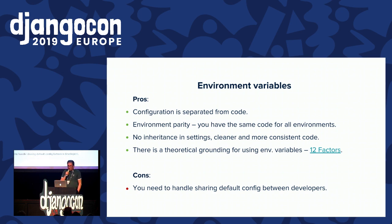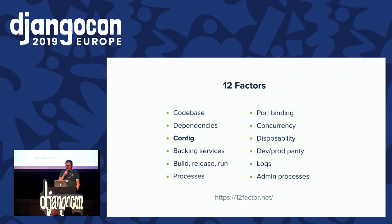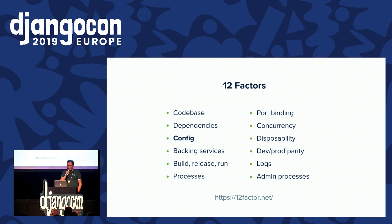This approach has a lot of advantages. Finally, we have configuration separate from code. You have environment parity between all your servers. There is no inheritance, and also there is theoretical grounding for using environment variables for configuration — it's 12 Factors. 12 Factors is a collection of recommendations to build web apps to be easily deployed and scaled in the cloud. It was created by Heroku, a well-known cloud hosting provider. In terms of this talk, we are interested in the configuration factor, which literally says we need to use environment variables. If you are not familiar with 12 Factors, I strongly recommend you check their website.